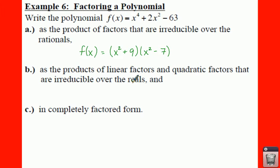Now, for B, we want to write as products of linear factors and quadratic factors that are irreducible over the reals. Well, irreducible over the reals. If you take the square root of 9, or if you solve x squared plus 9, what's going to happen is you're going to end up getting an i, an imaginary root. So you actually get plus or minus 3i when you take the square root of both sides. So that's not going to work out, because that's not a real value.